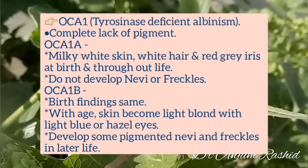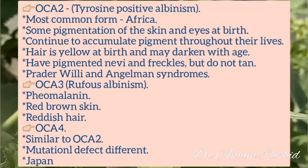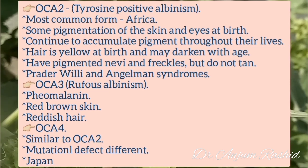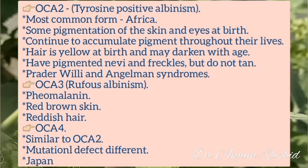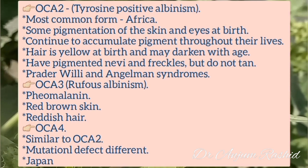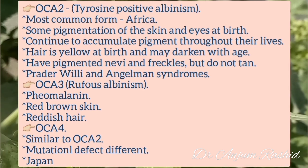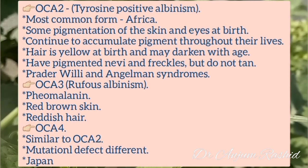Oculocutaneous albinism type 2, also known as tyrosine-positive albinism, is the most common form found in Africa. There is some pigmentation of the skin and eyes at birth, and they continue to accumulate pigment throughout their lives. Hair is yellow at birth and may darken with age. They have pigmented nevi and freckles. Prader-Willi syndrome and Angelman syndrome also have tyrosine-positive albinism.